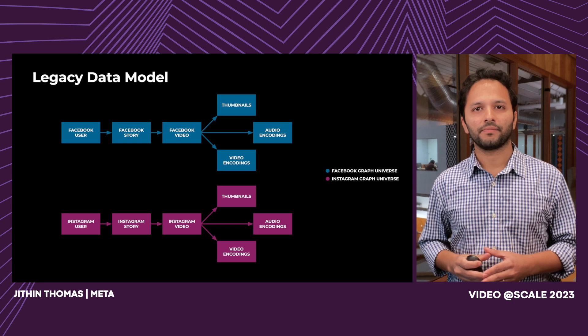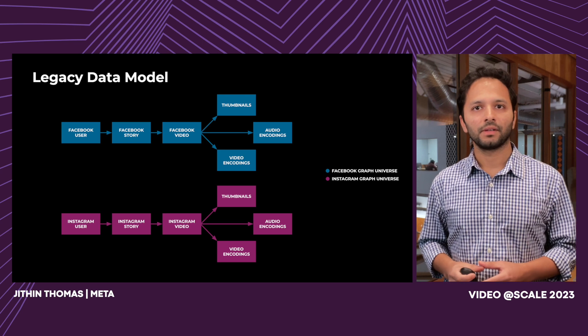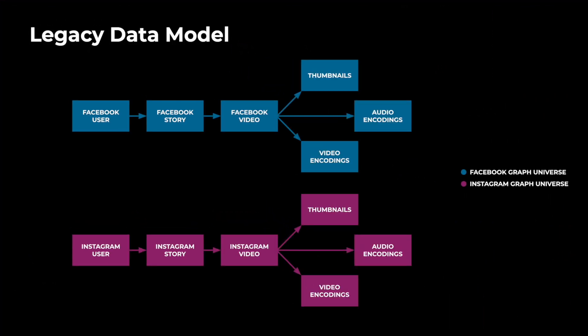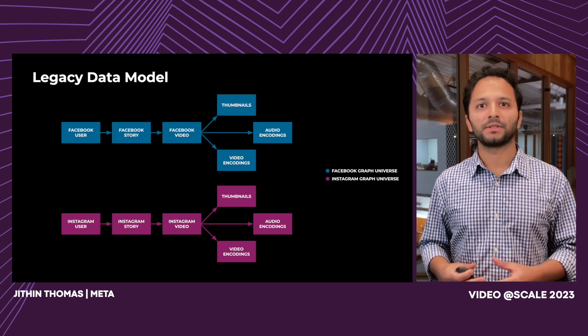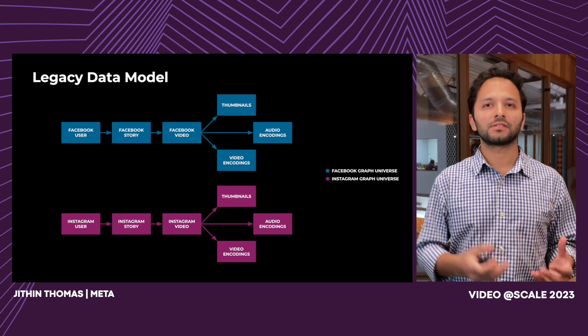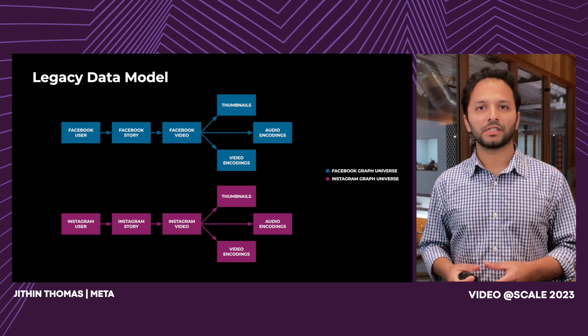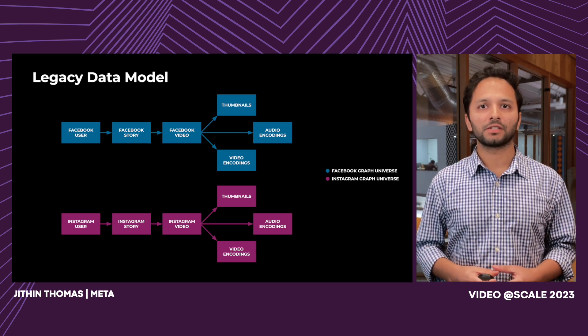Let's take a look at the data model side of things. At Meta, entities are represented as nodes within our social graph store. Consider the example of a story video cross-posted from Facebook to Instagram. Within the graph store, there's a concept called universes, which separate nodes into logical partitions to ensure isolation of data, schemas, and policies. In this diagram, the blue nodes represent the Facebook story — there's a node for the user, for the story, for the video, and for the artifacts including thumbnails and encodings. When the video is cross-posted from Facebook to Instagram, although thumbnails and encodings are already ready, there's no way to reuse them on the Instagram side, because nodes that belong to two different universes are incompatible and cannot have edges between them. This meant we had to reprocess the video on the Instagram side, resulting in higher latency, higher chances of failure, lower reliability, and duplicate compute and storage.